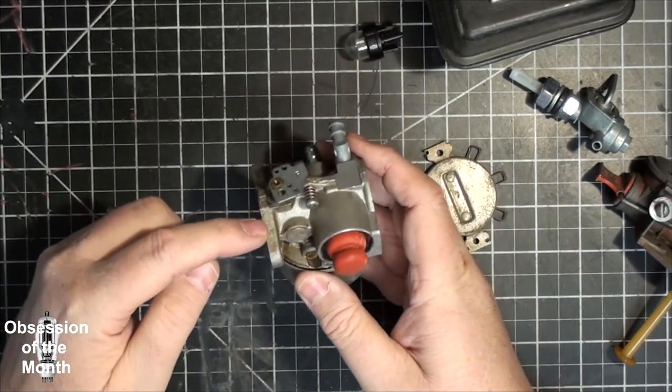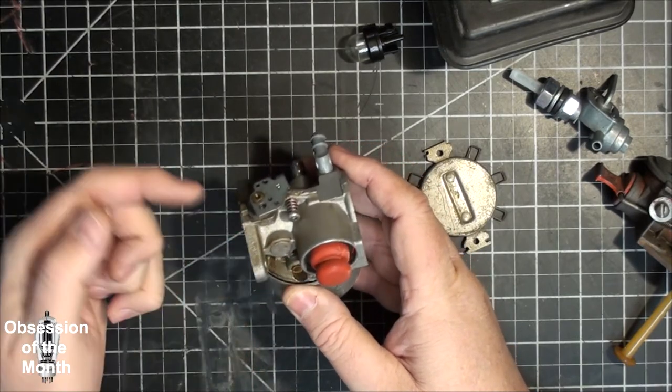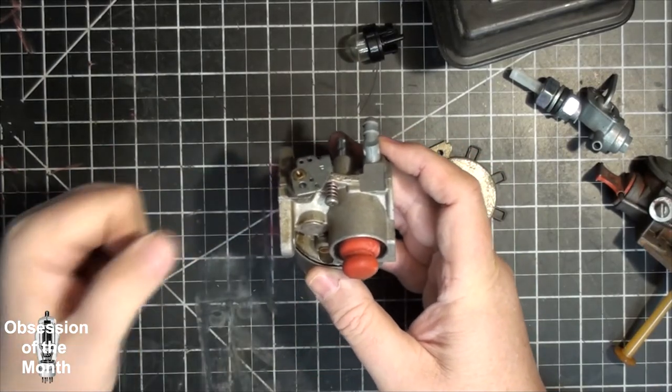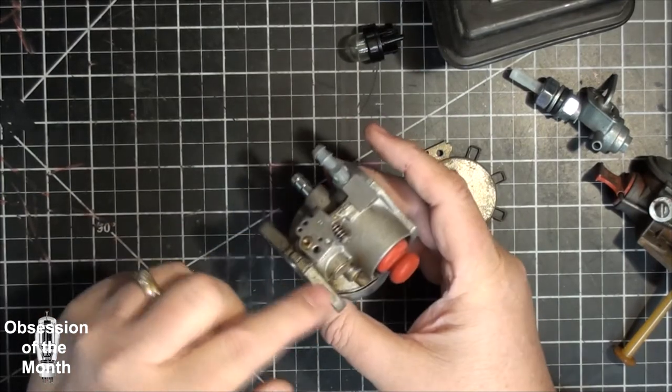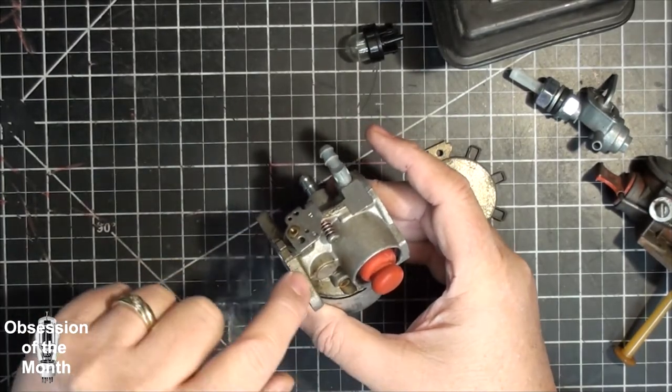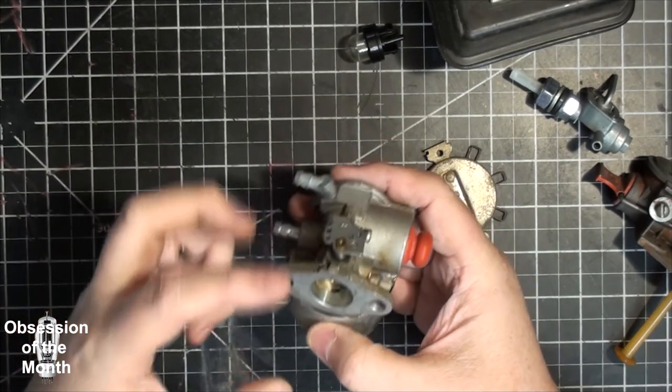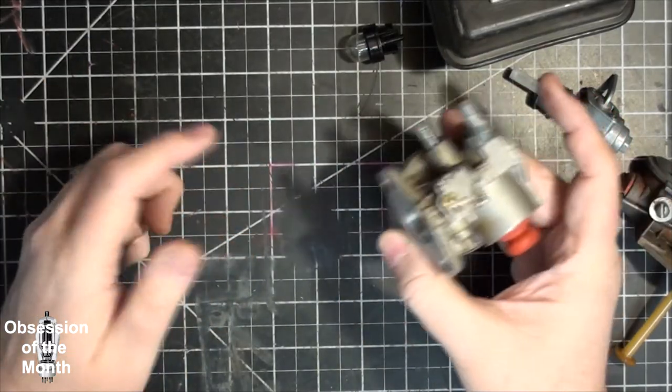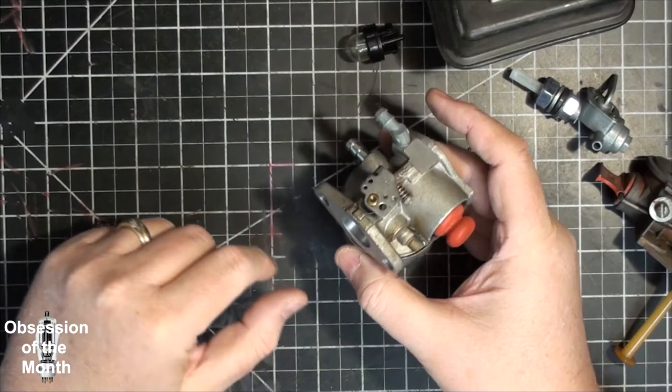You're recirculating it back into the tank. So when you're doing it 10 times or whatever it says, you're making sure that the line is full of fuel, that the fuel is in the carburetor, and that the outgoing line is completely full. That helps facilitate its starting.